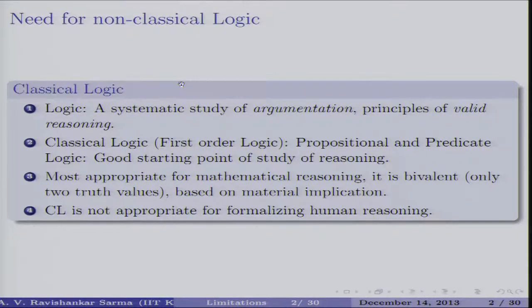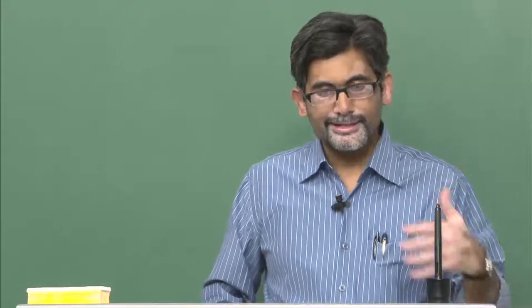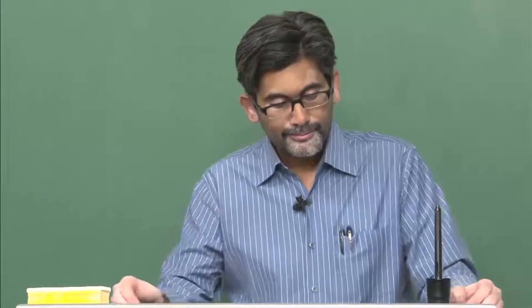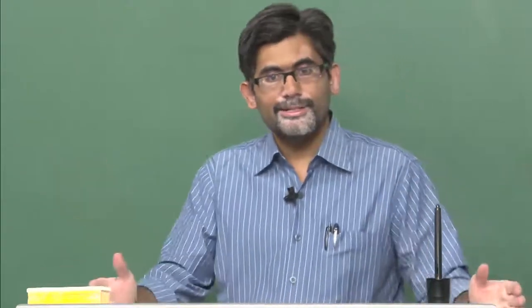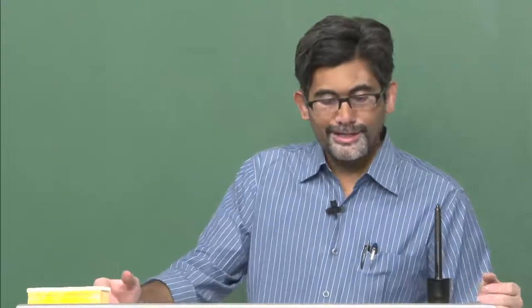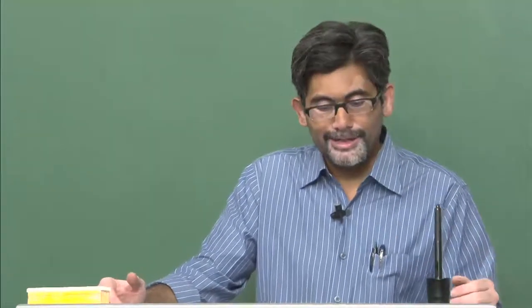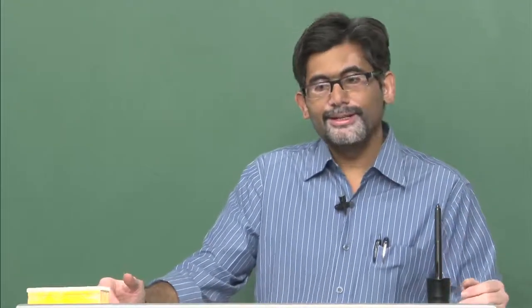Classical logic is not appropriate for formalizing human reasoning. We will see examples where it cannot be meaningfully applied. Classical logic fails to provide a satisfactory account of conditionals — if all conditional statements are expressed simply as 'if P then Q,' there are problems, including the paradox of material implication. Not all conditionals can be expressed using the material implication definition. Arguments involving possibility, necessity, and logic of knowledge also present problems.